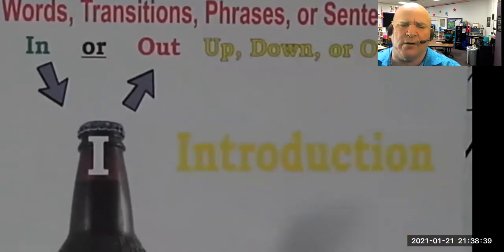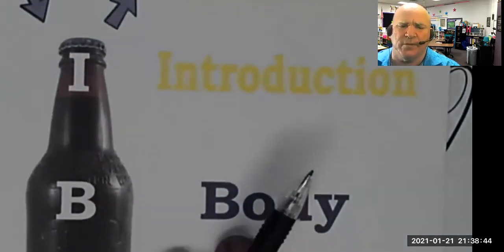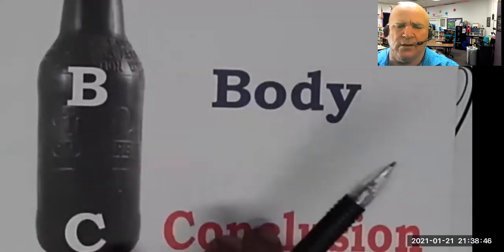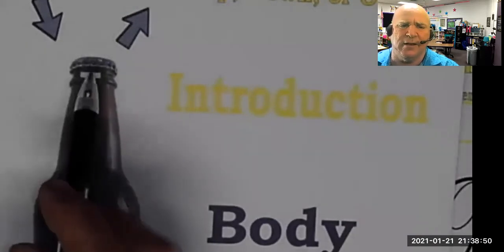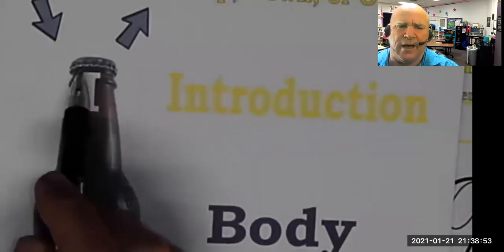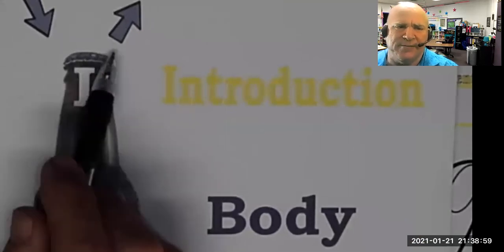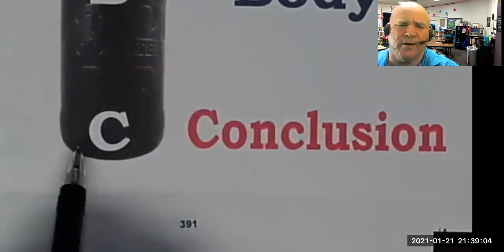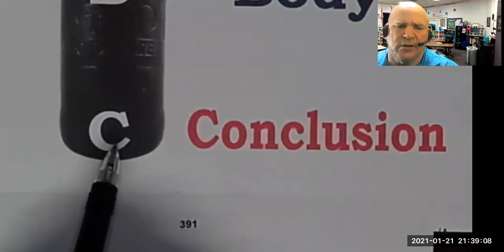I like the root beer IBC bottle because it stands for Introduction, Body, and Conclusion. Every passage has to have a beginning — think of the little cap as the hook. Does it have any fizz? If somebody left the lid off the bottle there's no fizz. If there's no bottom glass there's no conclusion. Every essay must have those three parts.